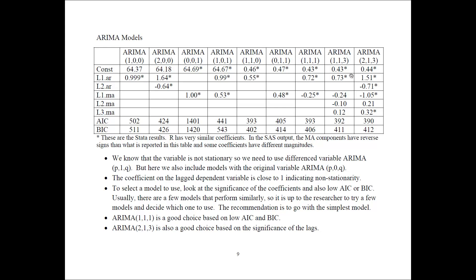So which model should we pick? There are two guidances. First, look at the significance of the coefficients. Second, look at the AIC and BIC — the lower the better, because it means you capture good fit with few parameters, which is desirable. I personally would recommend this one because it is very parsimonious — it has the AR component and the MA. But this one with two AR lags and three MA lags is also a good choice since the third lag is significant. This is more an art than a science at this point — you may even include both of them in the paper.